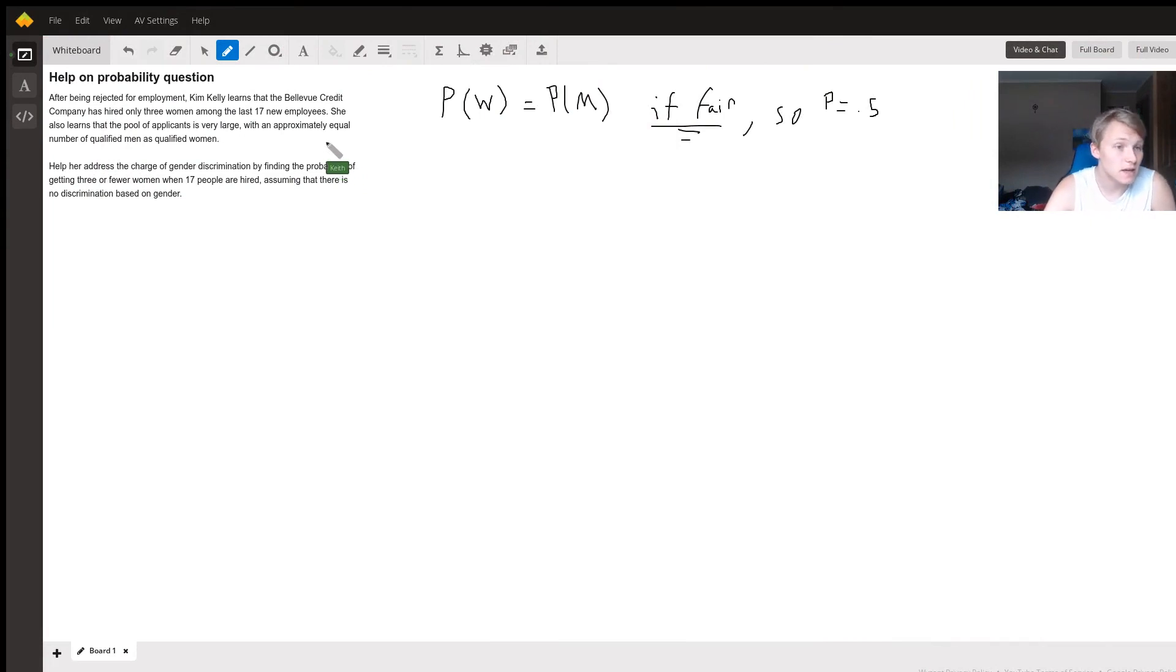This is a binomial distribution question, which means we have a choice of either picking one thing or the other a certain number of times, and we want to find the probability of a certain event occurrence. In this case, we want to find the probability of getting three or fewer women hired when there are 17 people hired, assuming that there is no discrimination based on gender. If it were fair, then the probability of a man or woman being hired would be 0.5.